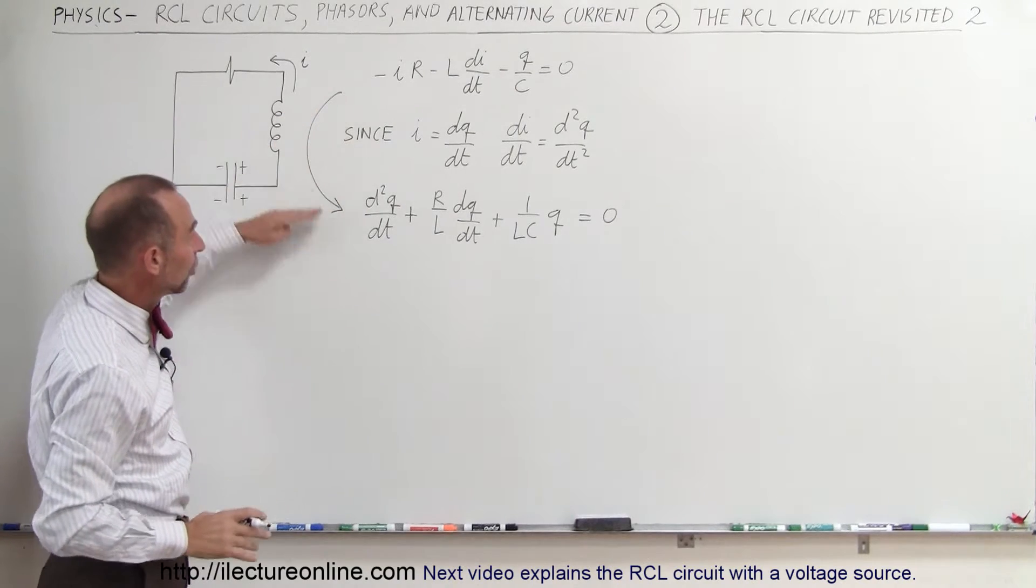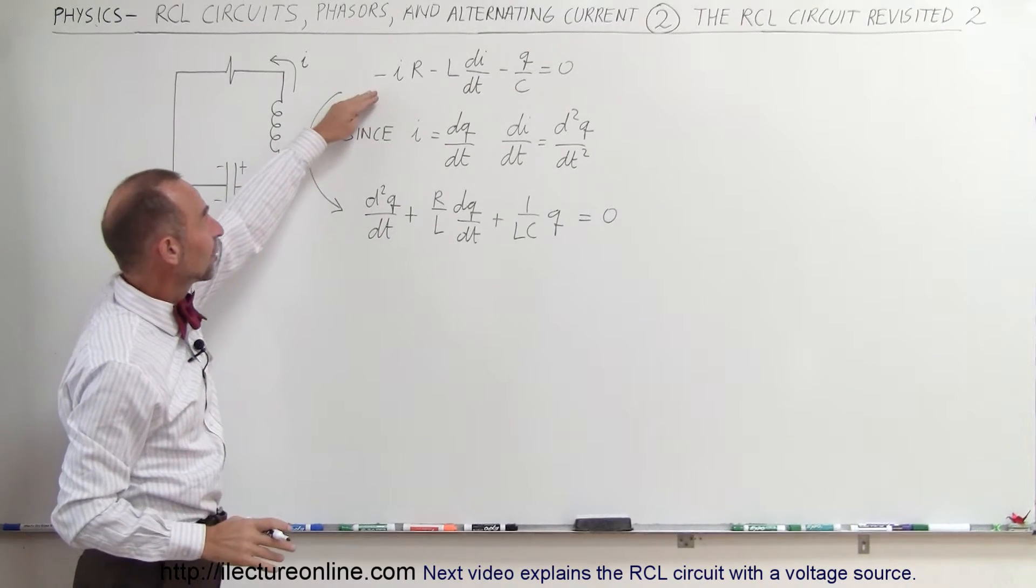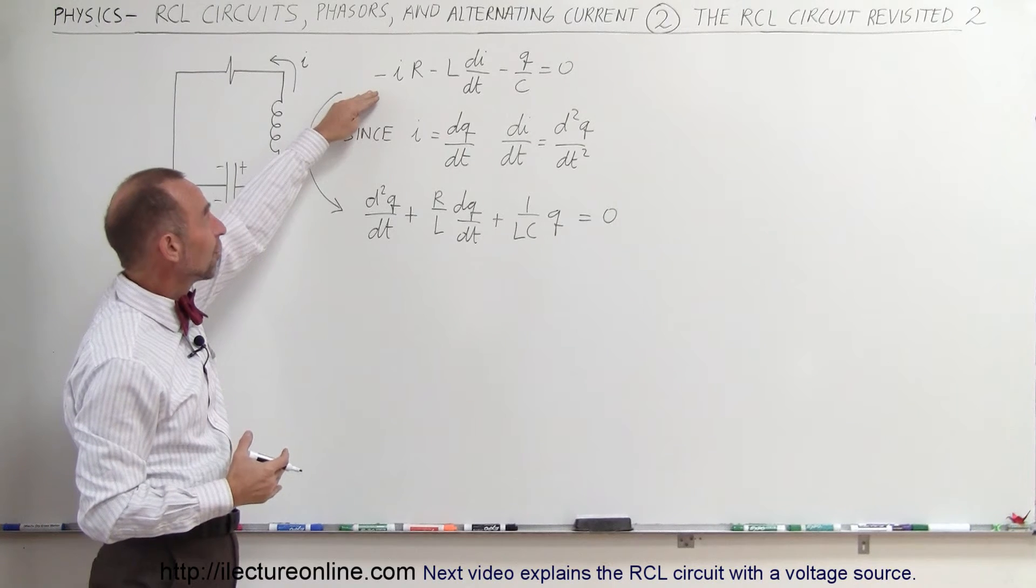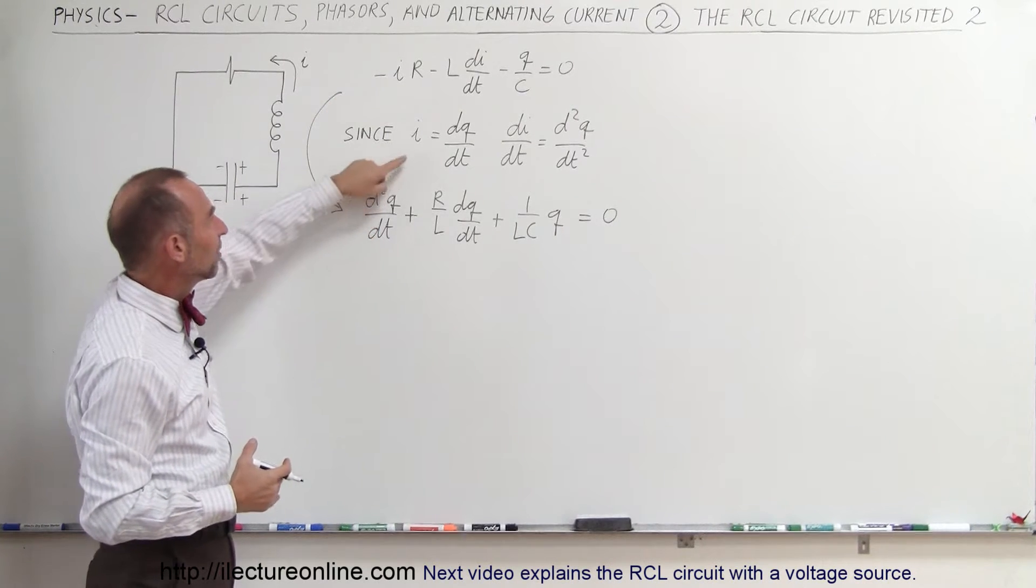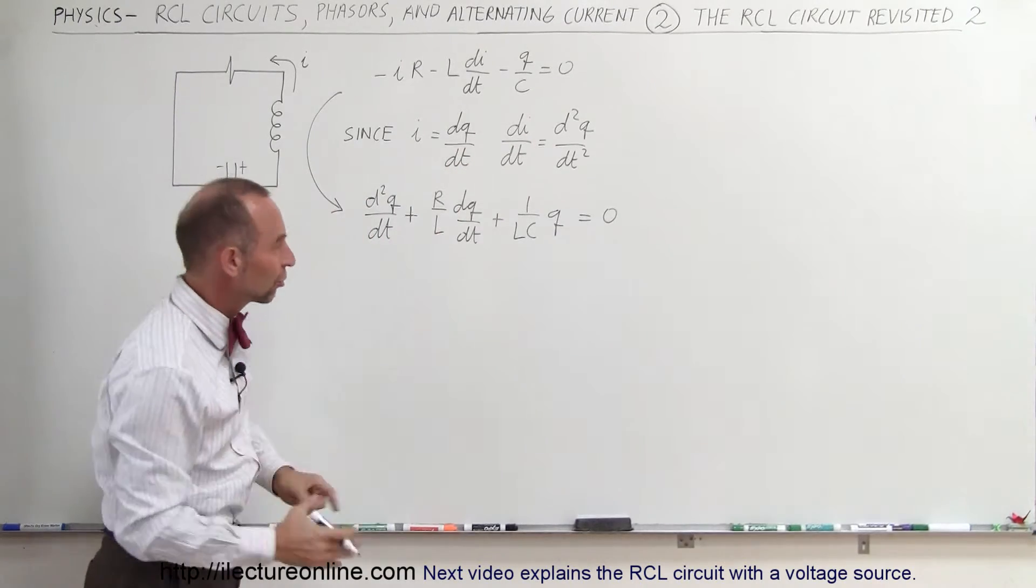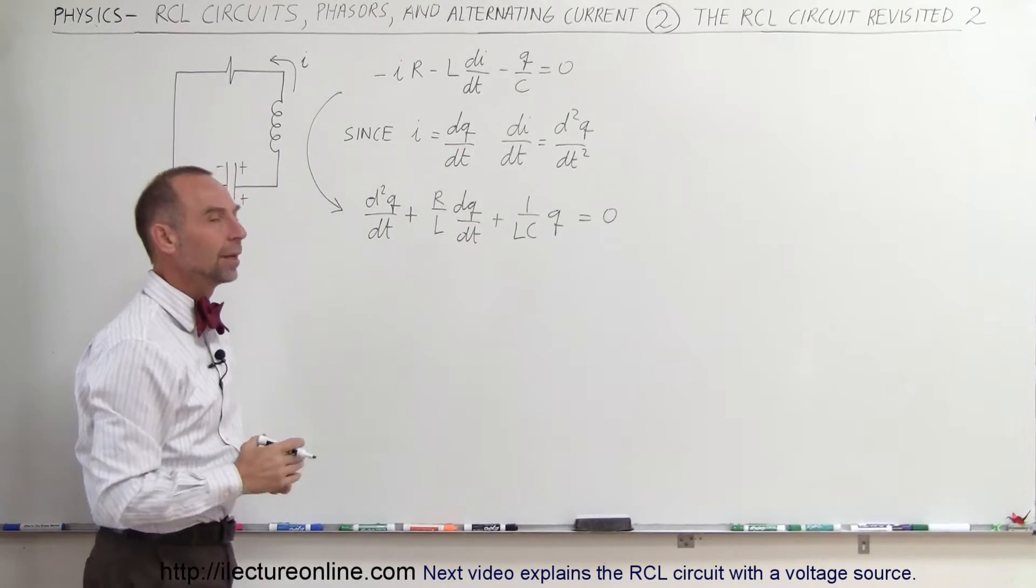So our differential equation will look like this. The same equation, when we divide both sides by negative one, divide both sides by L, and replace every i by dQ/dt and every di/dt by the second derivative, and rearrange terms, it will look like that.